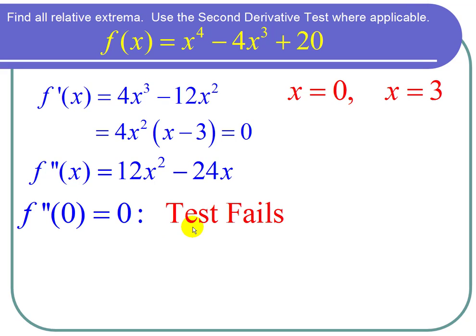So I have to use the first derivative test. I plug in a number a little to the left of zero and a number a little to the right of zero into the first derivative. A little to the left of zero is negative 1. If I plug in negative 1, I get negative 4 minus 12. So f prime of negative 1 is negative 16.